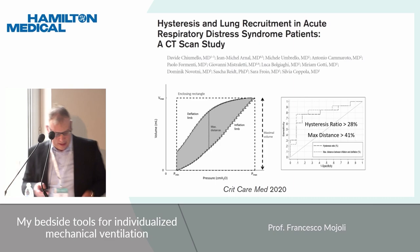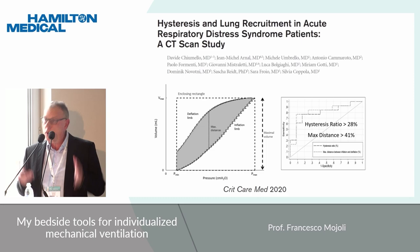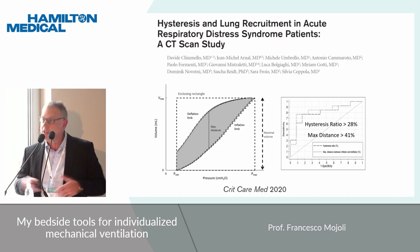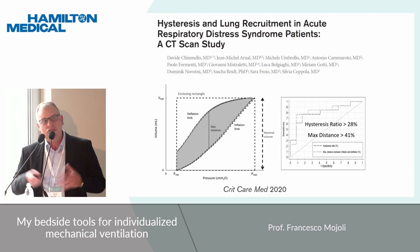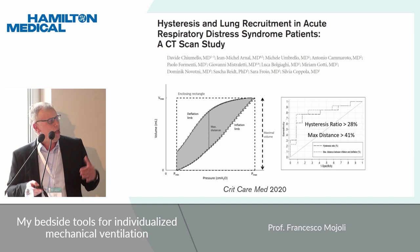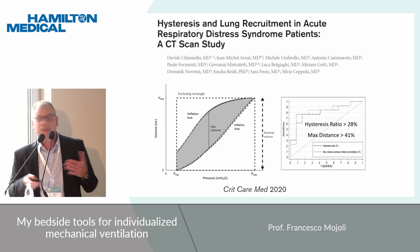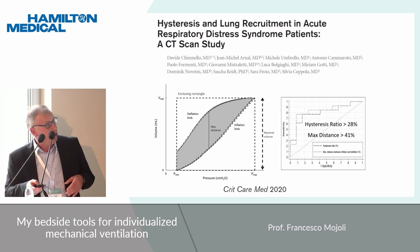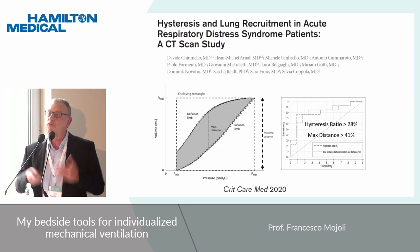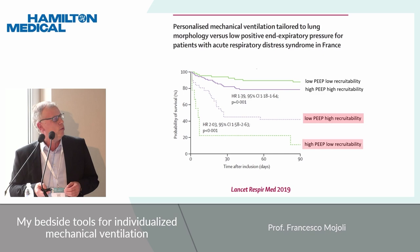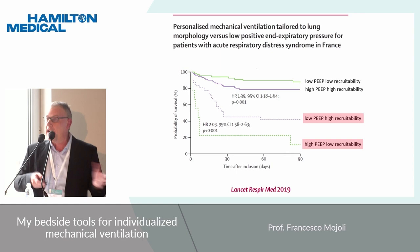This was well demonstrated and validated against quantitative CT, which is the gold standard for this assessment. So the larger the hysteresis, the larger the loop, the greater the potential for lung recruitment in our patient. This author suggested a threshold: above this threshold, when you detect a max distance larger than 41% of the max volume generated during the maneuver, that is a patient with a high potential for lung recruitment.